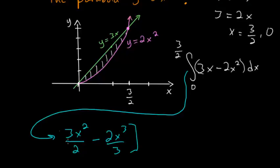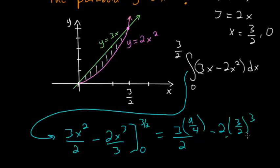And we have to evaluate this expression between the bounds of 0 and 3 halves. So we can plug in the top bound, 3 halves squared, we have 3 halves there, multiplied by 9 fourths. And we subtract 2 times 3 halves to the third power, all divided by 3.